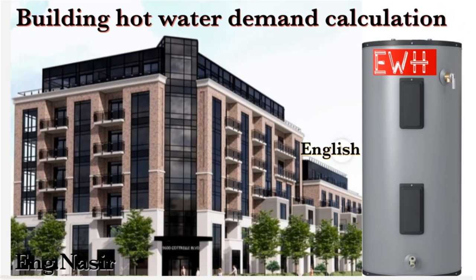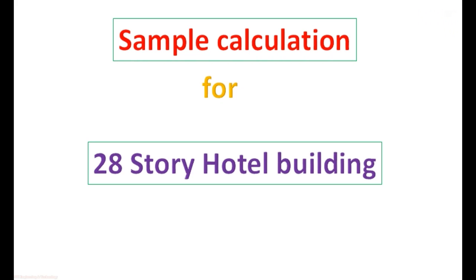If you are not using a central hot water system, then you can follow the same procedure to select the water heater for your specific area. To make it easy to understand, we will do a sample calculation for a 28-story hotel building.